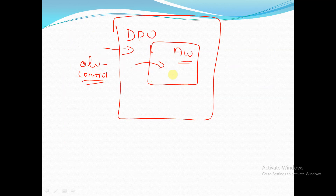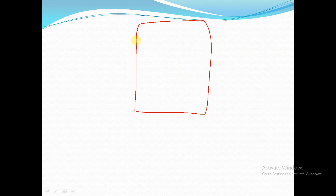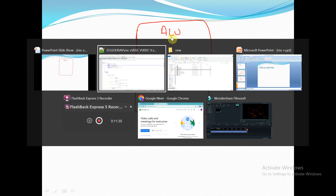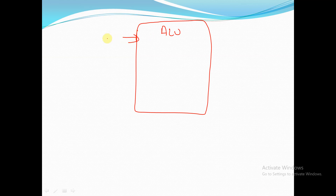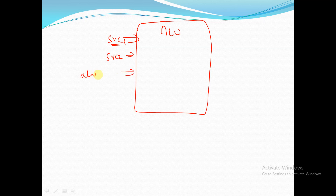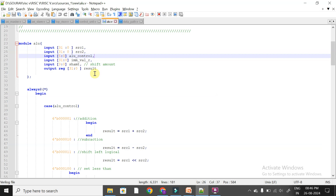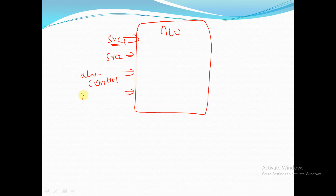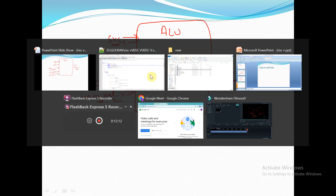The ALU inputs are: source1 (32-bit), source2 (32-bit), ALU control (6-bit, from the control unit), immediate value R, and shift amount (sh_amt). The output is 'result'. These are the signals associated with the ALU module.